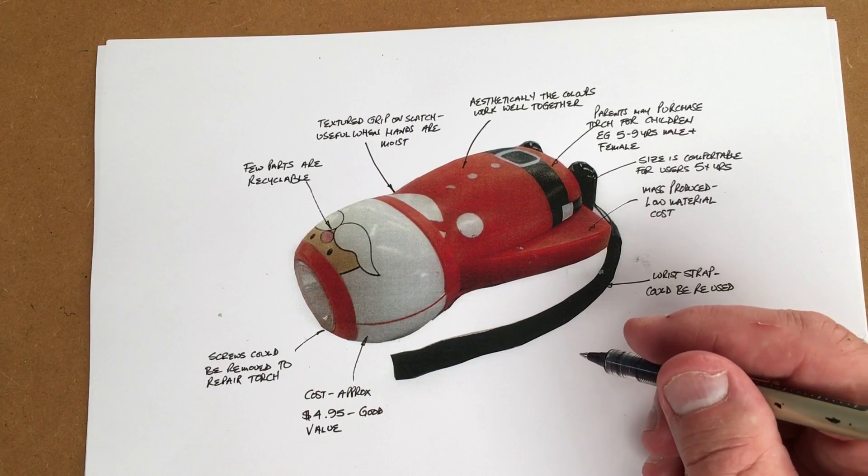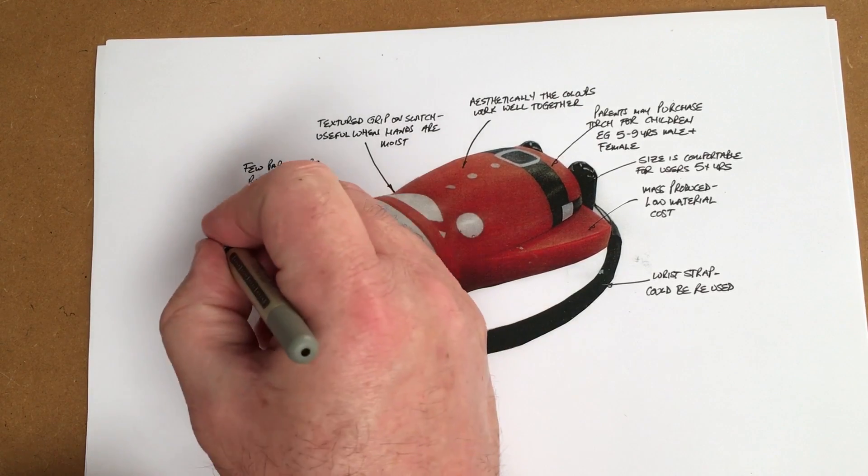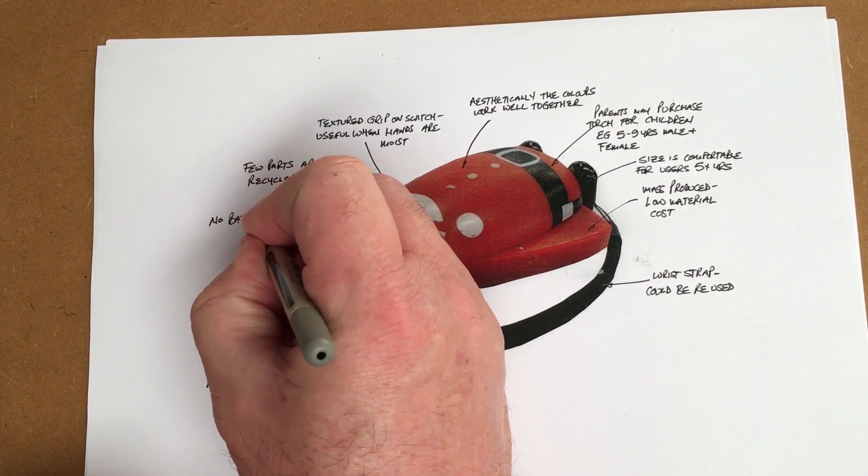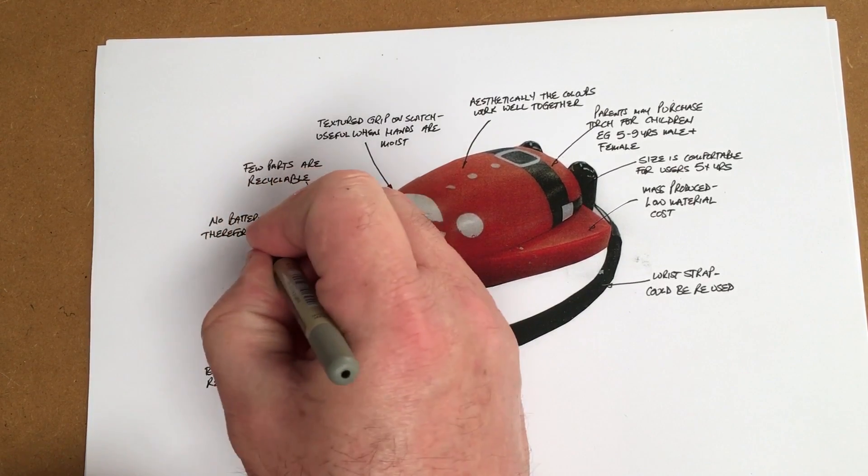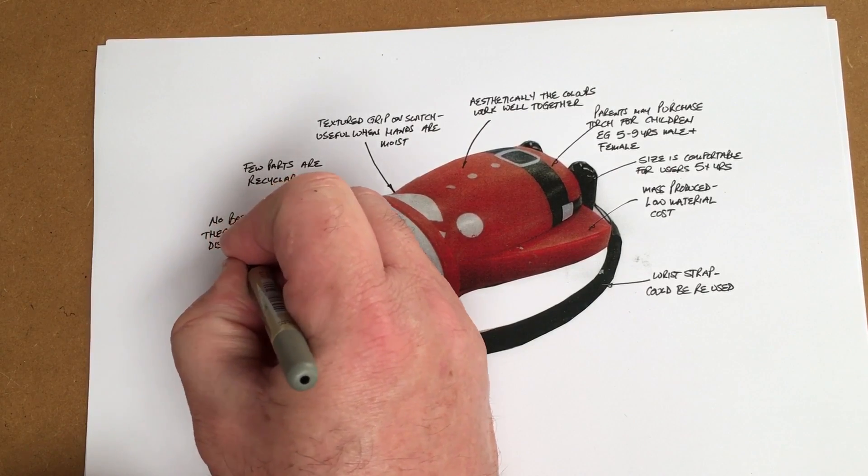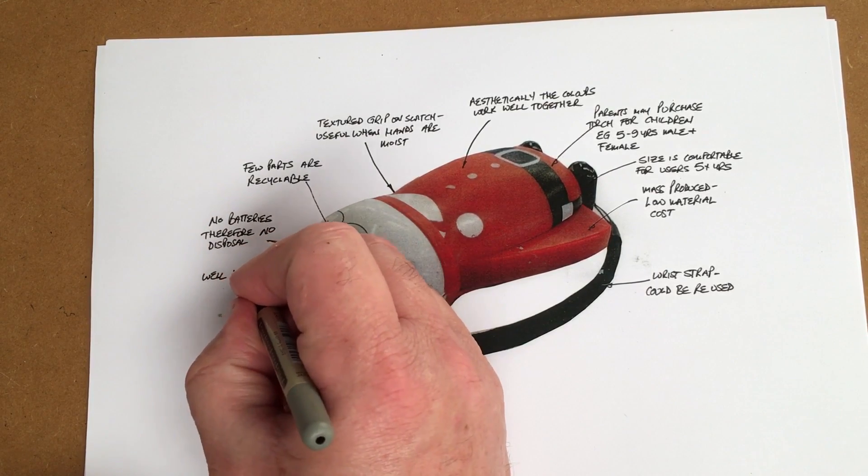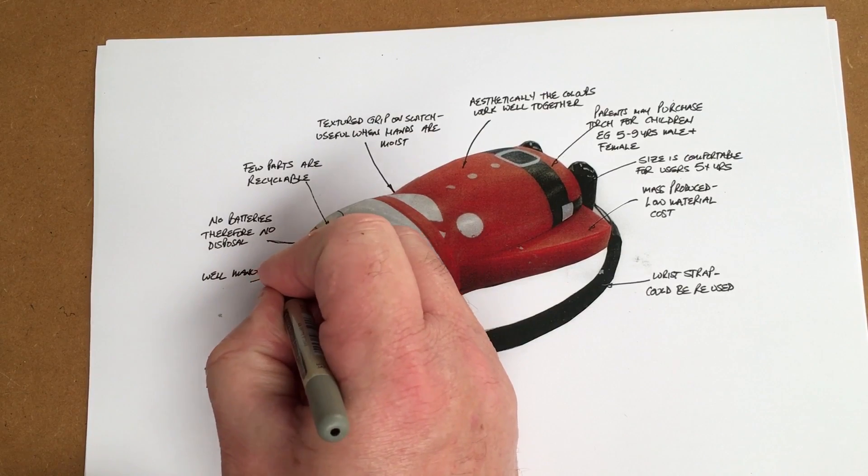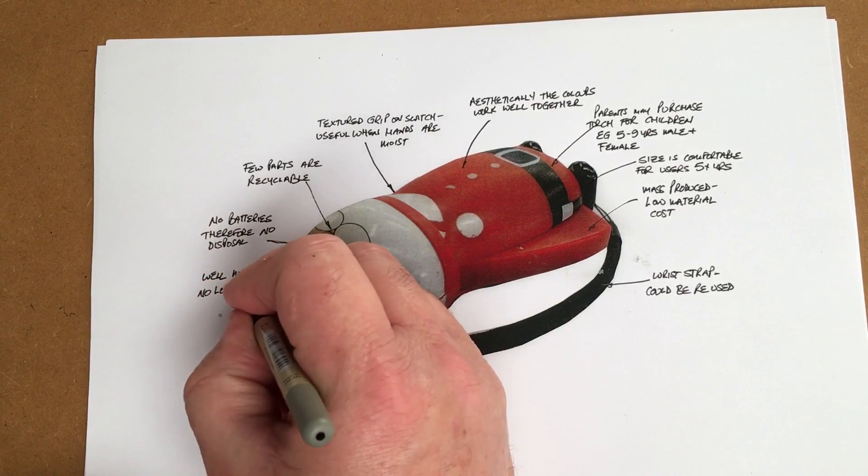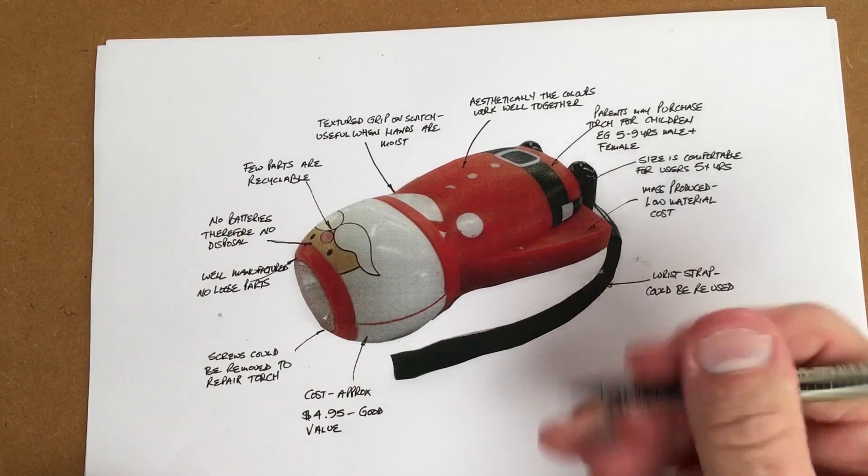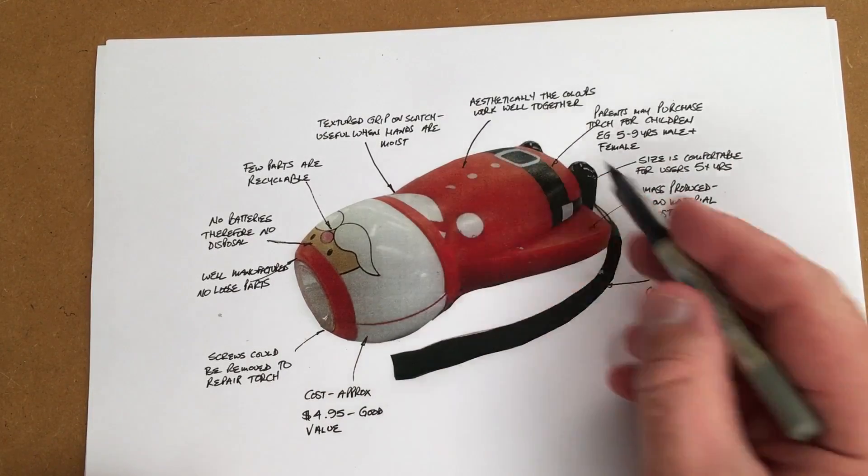S for safety. I would say that no batteries, therefore no disposal. I would add also that it's well manufactured, no loose parts. We haven't got any choke hazards or finger traps or anything like that or sharp edges. You could add nice smooth curved edges that aren't sharp.